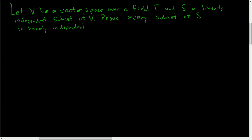In this problem, we're going to prove that every subset of a linearly independent set is also linearly independent. We have V, a vector space over a field F, and S is a linearly independent subset of our vector space. We're going to prove that every single subset of S is also linearly independent. So, proof.